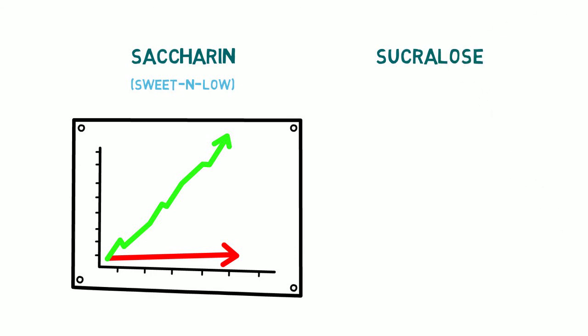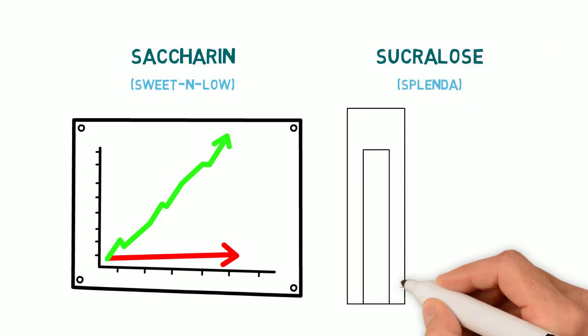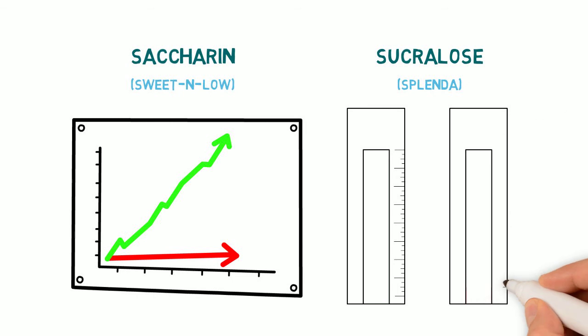Sucralose, commonly known as Splenda, is 600 times sweeter than regular sugar despite being made from real sugar. This is the least toxic type of artificial sweeteners.